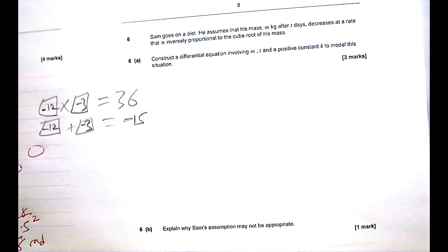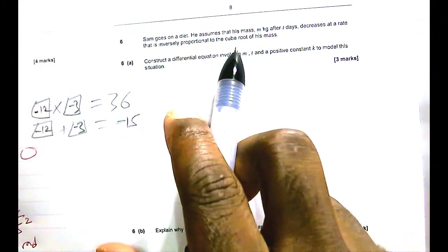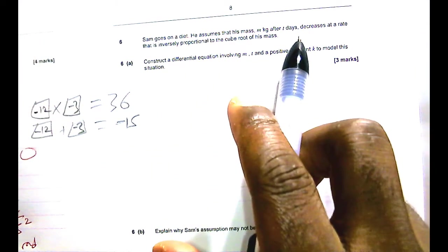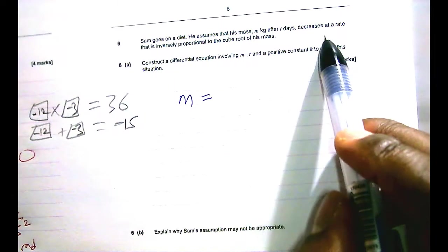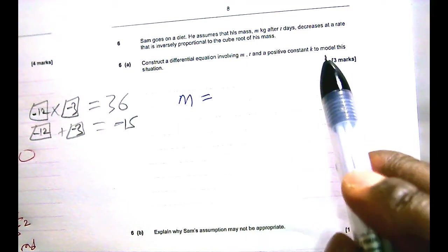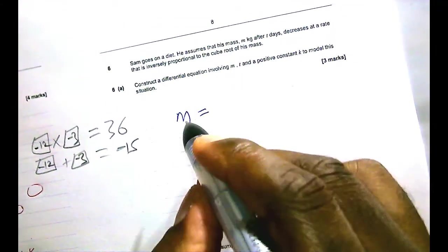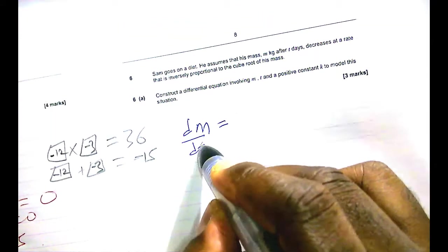Well, we've been told that Sam goes on a diet. We expect his mass to reduce with time. But of course, you can only reduce your mass to some extent. You cannot disappear or go into extinction by losing mass. So mass should never go down to zero, right? He assumes that his mass m after t days. So m would be what? Decreases at a rate. Okay. So we're talking about the rate now, not the actual mass. So the rate of this mass.